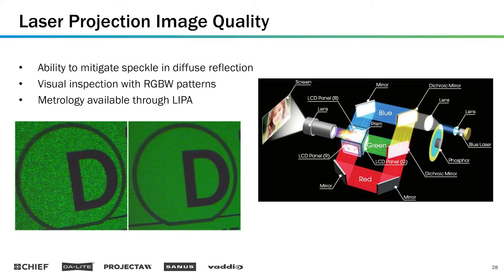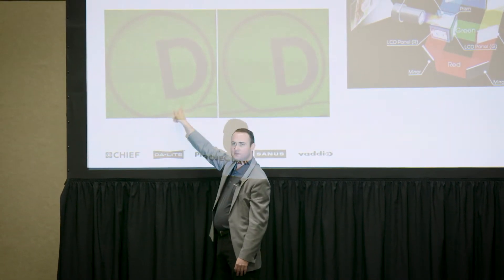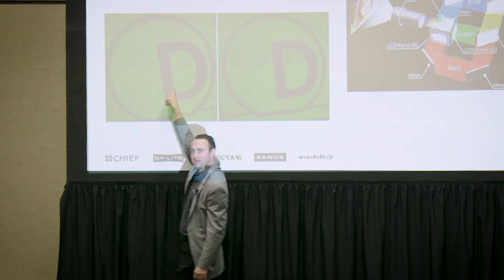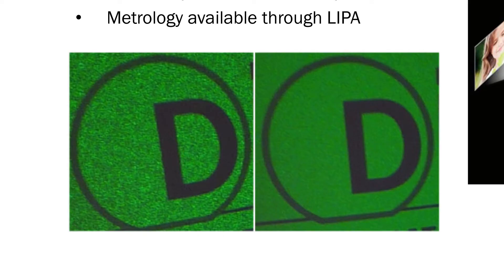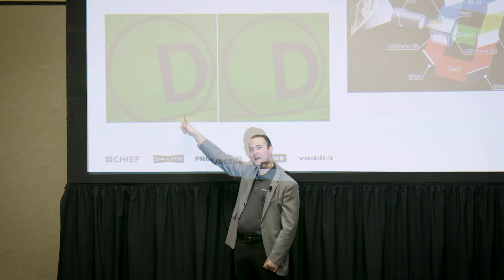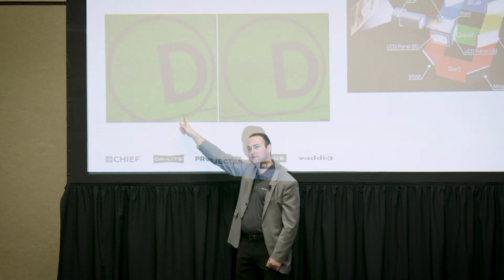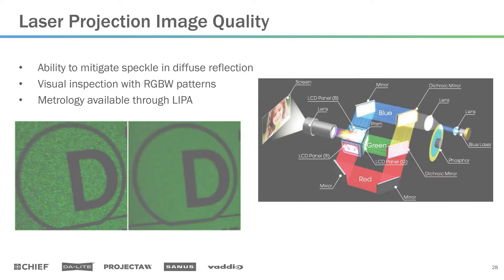Not a great image here because of the resolution of the projector, but you can see the DLP logo from the earlier slides. Here's the D with speckle — you can see that pattern. Here's the D without speckle using the same projector. The difference is the surface: this surface is unable to mitigate the speckle, while this one will, and that's all driven by the laser within the projection system.